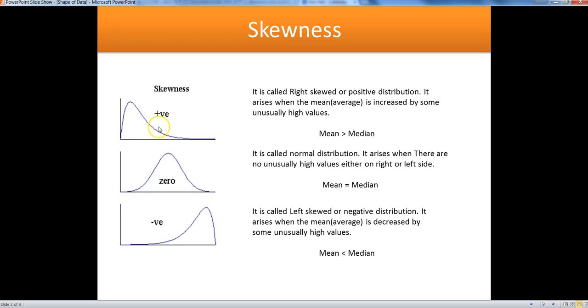The mean would be somewhere here in this case, because it is always a central value. On the right hand side we have some unusually high values, and because of this our data distribution is right skewed. In this case, mean is always greater than the median.